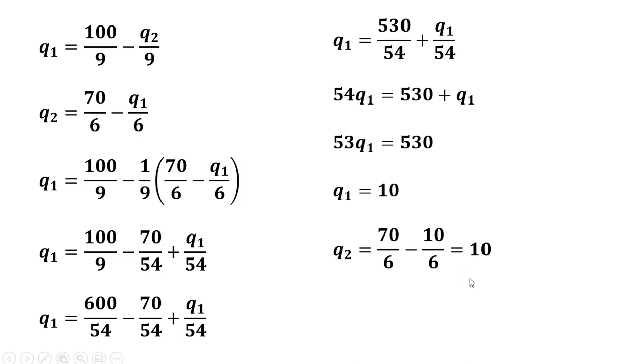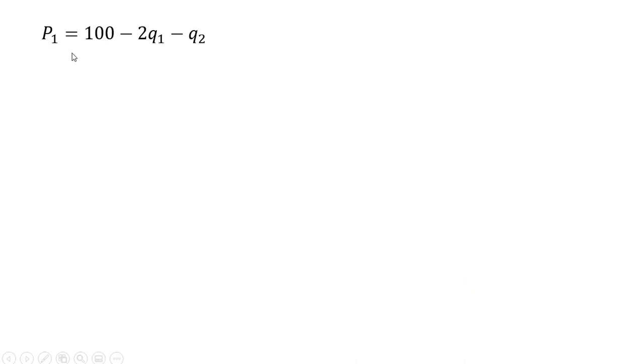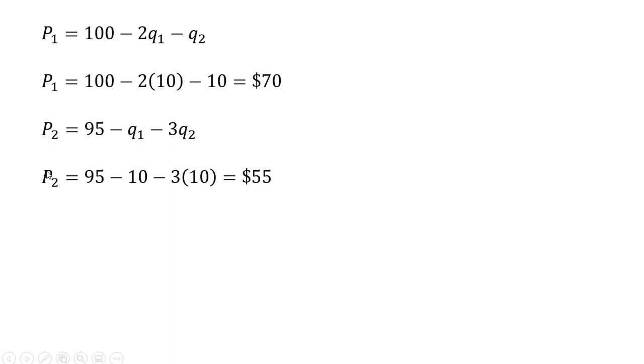To get the prices, we'll take those inverse demands and evaluate them at the output levels that we just found. So firm 1 produces 10 units, firm 2 produces 10 units, so firm 1 will charge a price of $70 each. As for firm 2, same thing. Take its inverse demand and evaluate it at the Q subscript 1 and Q subscript 2 that we just found, and we'll see here that firm 2 charges a price of $55.